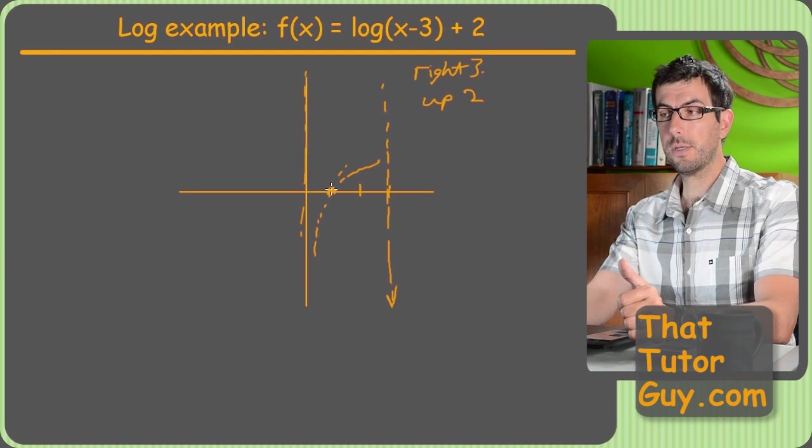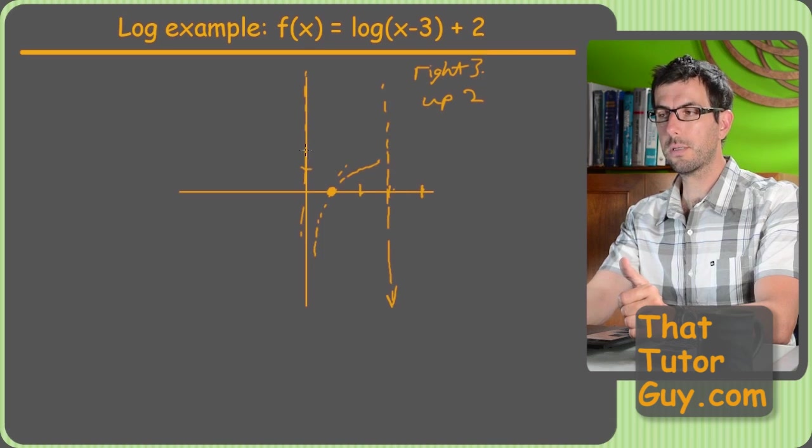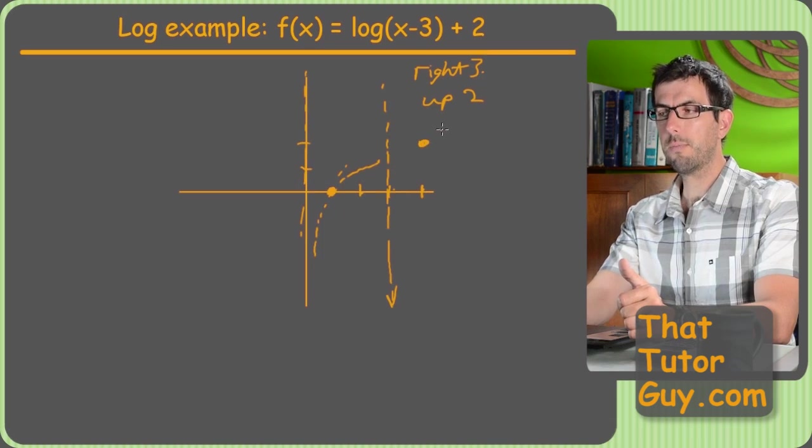And then my key point is going to move right 3 and up 2, because everything shifts right 3 and up 2. So this key point goes 1, 2, 3, over to 4, and goes up 2. So there's my key point.